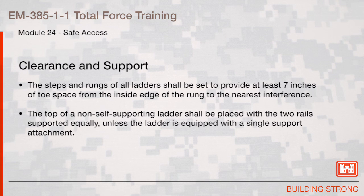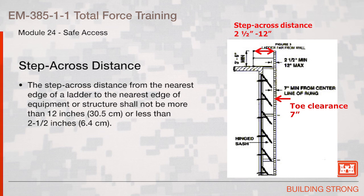Clearance and support: The steps and rungs of all ladders shall be set to provide at least seven inches of toe space from the inside edge of the rung to the nearest interference. The top of a non-self-supporting ladder shall be placed with the two rails supported equally unless the ladder is equipped with a single support attachment. The step-across distance from the nearest edge of the ladder to the nearest edge of the equipment or structure shall not be more than twelve inches or less than two and a half inches.